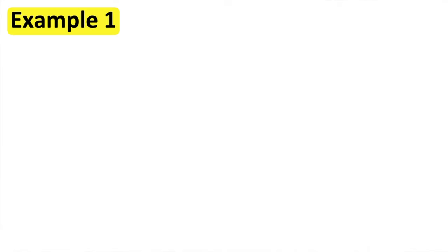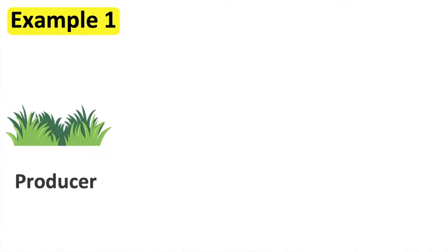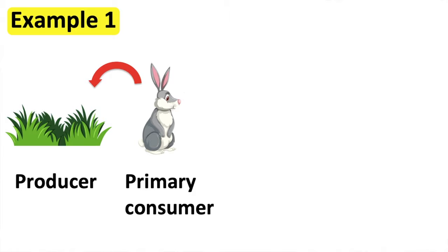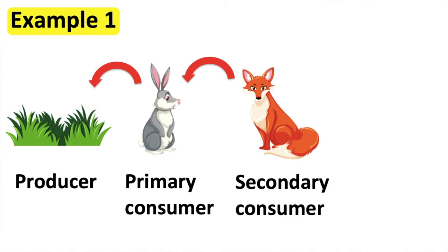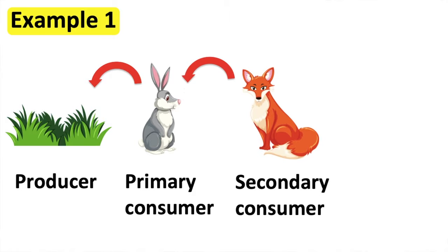Now, let's look at some examples. Here is a food chain: the rabbit eats the plants, the fox eats the rabbit, and the lion eats the fox.